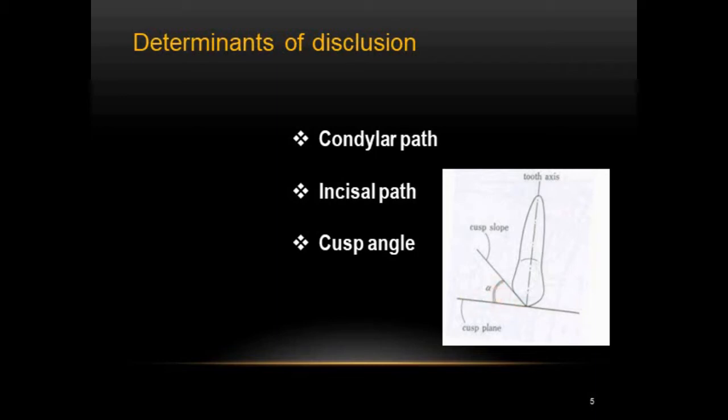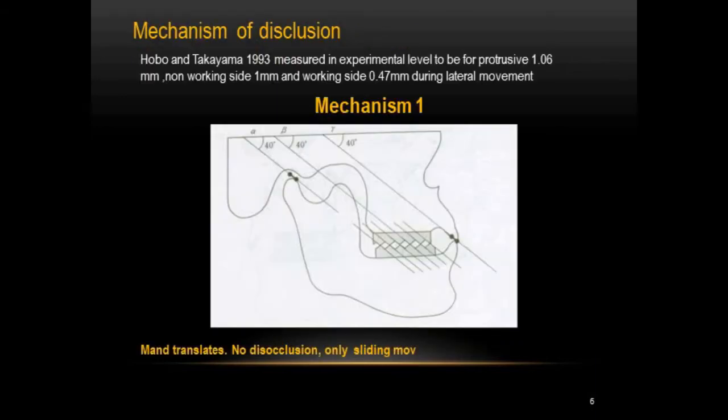Hobo and Takayama conducted different studies and found four mechanisms by which disclusion can happen. They measured the amount of disclusion to be an average of 1.06 mm during protrusion, 1 mm on the non-working side, and 0.4 mm on the working side during lateral movement.